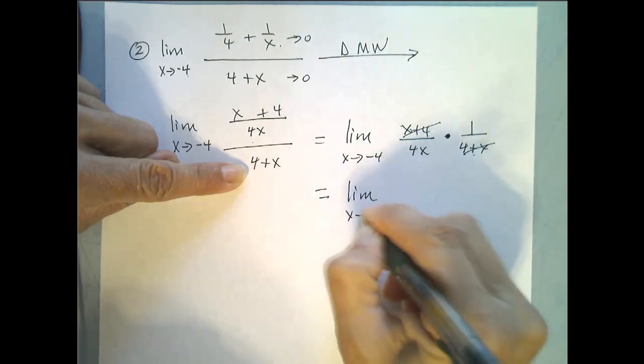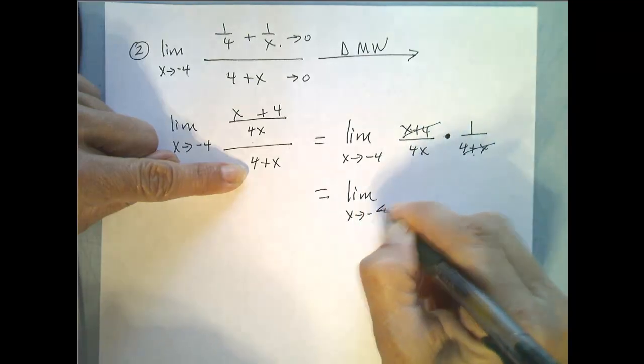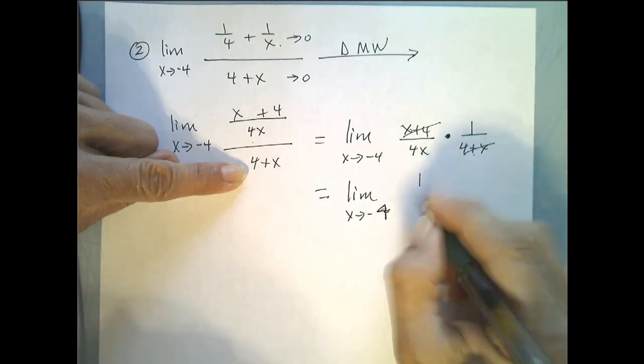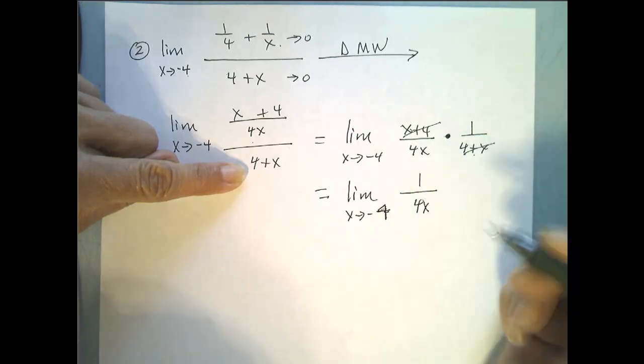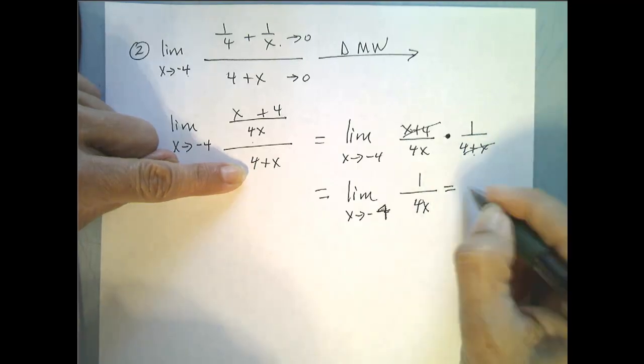And I'm left with the limit as x goes to negative 4 of 1 over 4x and now I can apply direct substitution. Plug in negative 4 for my x and I get negative 1 over 16.